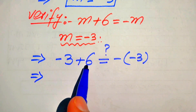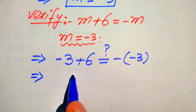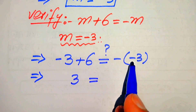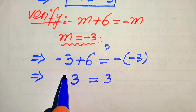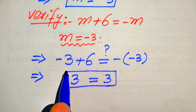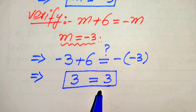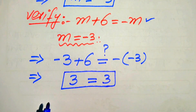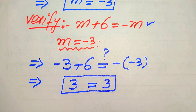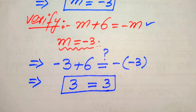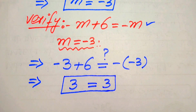When we compute minus 3 plus 6 we get 3, and on the right hand side minus times minus becomes plus, giving us 3 as well. This shows that m equals minus 3 satisfies the given equation. This is our final answer. If you have any other method, please write it in the comment section, and thank you for watching — please subscribe to my channel for more exciting videos.